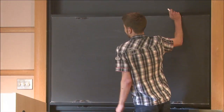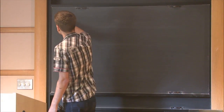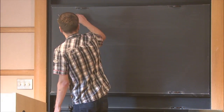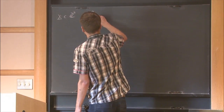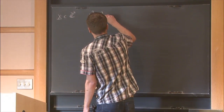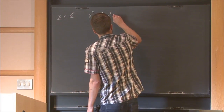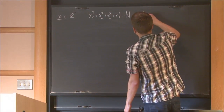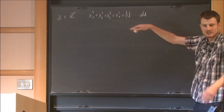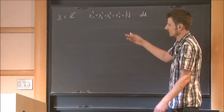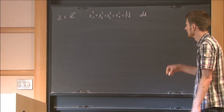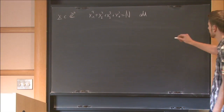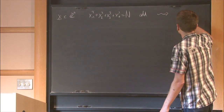To set the stage, we're going to look at integer solutions to the Diophantine equation: sums of four squares equal to an integer n. We assume n to be odd, because if n is divisible by a high power of 2, there are not really many solutions. These points live on a sphere of radius square root n, and we're going to project them down to S3.